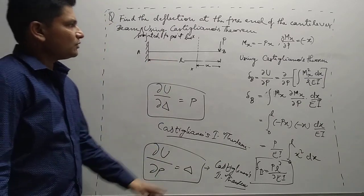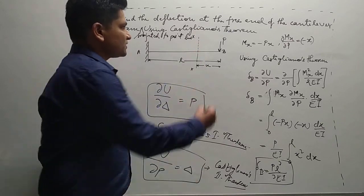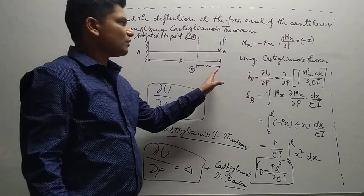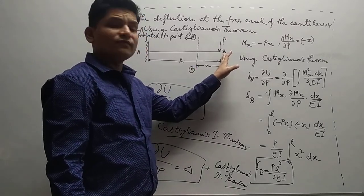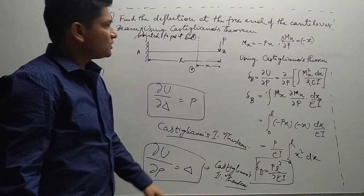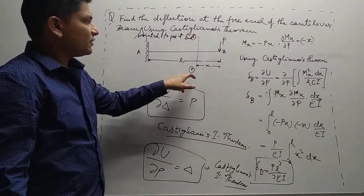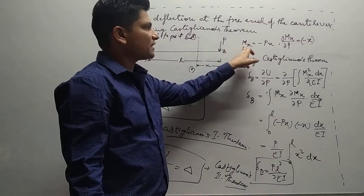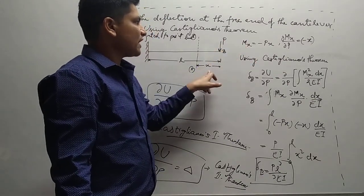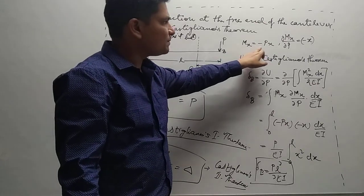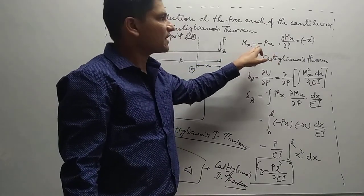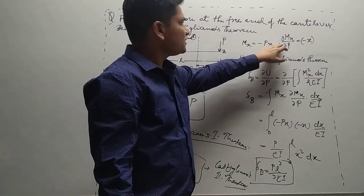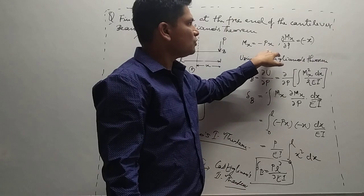What we need to do is take one section XX here, at a distance x from point B, at the point where the deflection is to be found. We write the equation of bending moment at this XX section. The bending moment at this XX section will be minus P times x. If we differentiate this bending moment with respect to the load, then δMx/δP equals minus x.